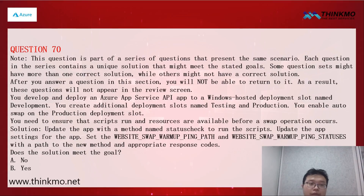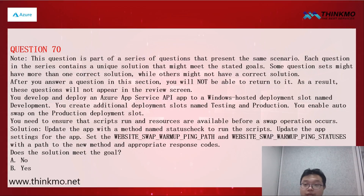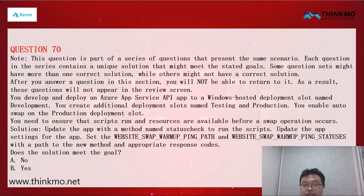Even though it's a true or false question, as you've seen with many questions, they deliberately reverse the 'no' and 'yes' options to set traps. So after you determine whether something is correct or not, make sure to carefully check the options. It's not always that A is 'yes' and B is 'no' — they often switch them around. Everyone really needs to pay attention and not fall into their traps. That's our 70th question.